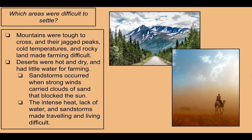Which areas were difficult to settle? Mountains were tough to cross — their jagged peaks, cold temperatures, and rocky land made farming difficult. They're beautiful, but not the easiest place for early civilization. Deserts were hot and dry with little water for farming. Sandstorms occurred when strong winds carried clouds of sand that blocked the sun, making traveling and living difficult. Typically, people wouldn't try to settle in mountains or deserts.